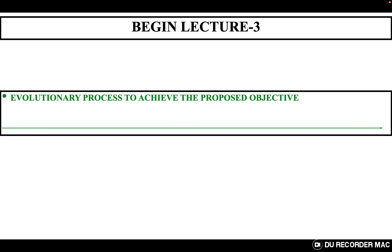Once again, good morning to one and all. Let us begin with lecture 3. As we have discussed some literary designs in the previous lecture, now we will focus on what we have proposed to mitigate the misalignment problems in wireless power transfer systems. As I already said in the objective, we have underwent an evolutionary process to achieve the proposed objective. Let us discuss about it.